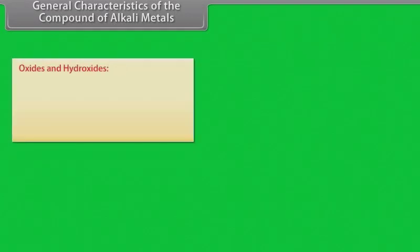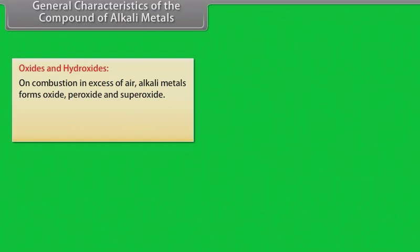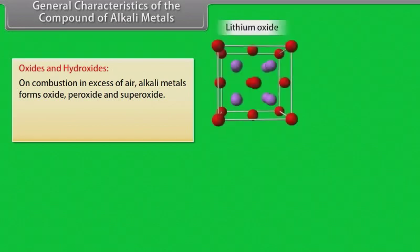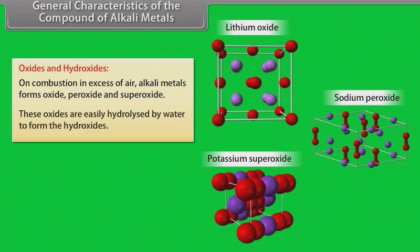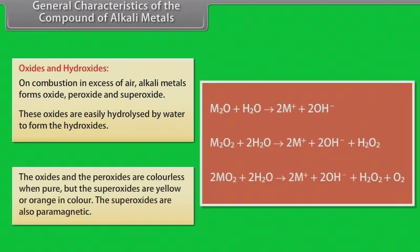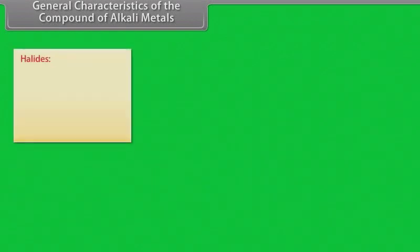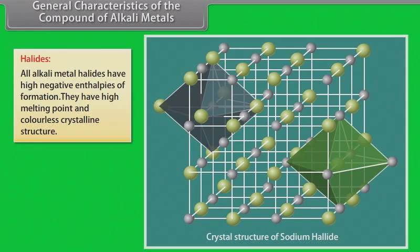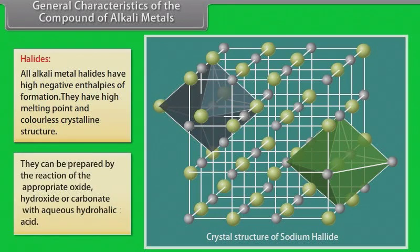General characteristics of the compounds of alkali metals. Oxides and hydroxides: on combustion in excess of air, alkali metals form oxides, peroxides and superoxides. These oxides are easily hydrolyzed by water to form hydroxides. The oxides and peroxides are colorless when pure, but superoxides are yellow or orange in color and are paramagnetic. Halides: all alkali metal halides have high negative enthalpies of formation, high melting points, and colorless crystalline structure. They can be prepared by the reaction of the appropriate oxide, hydroxide or carbonate with aqueous hydrohalic acid.